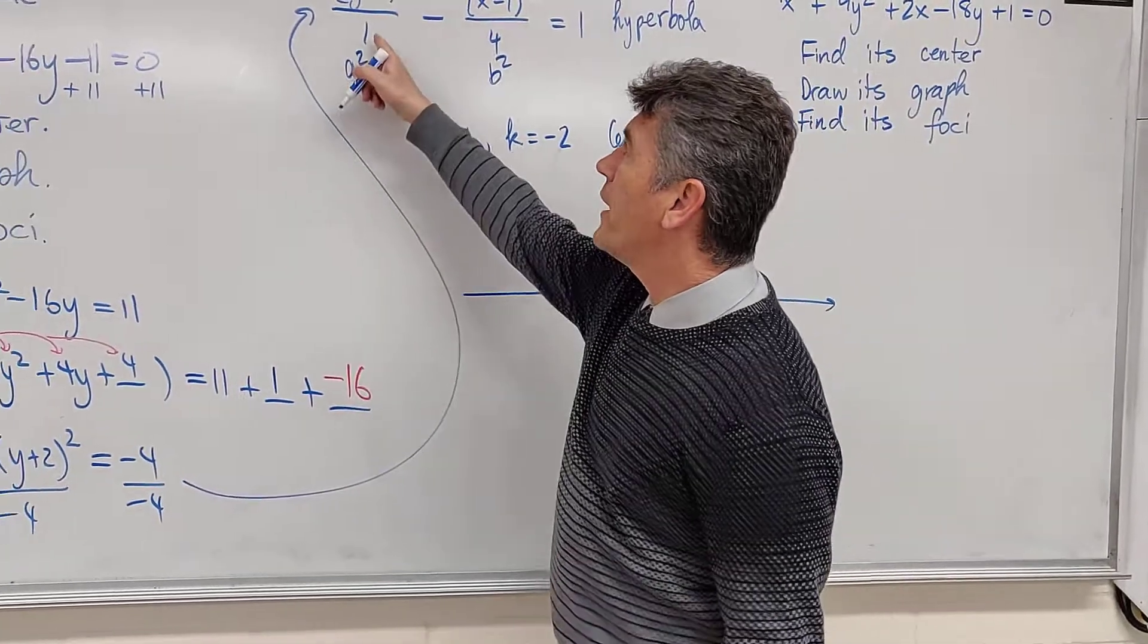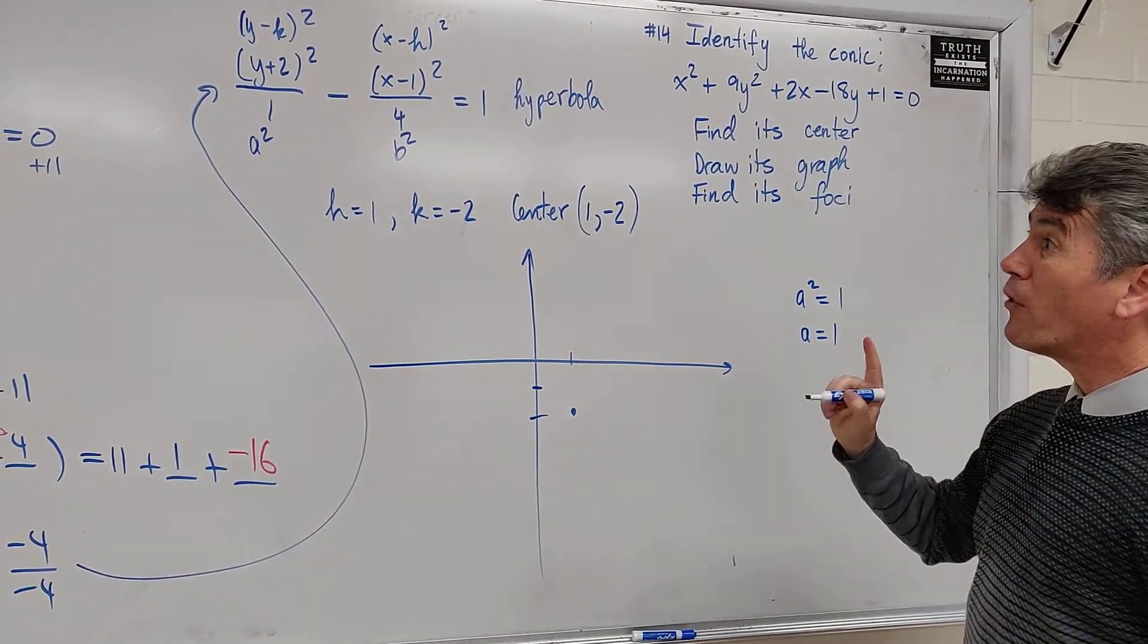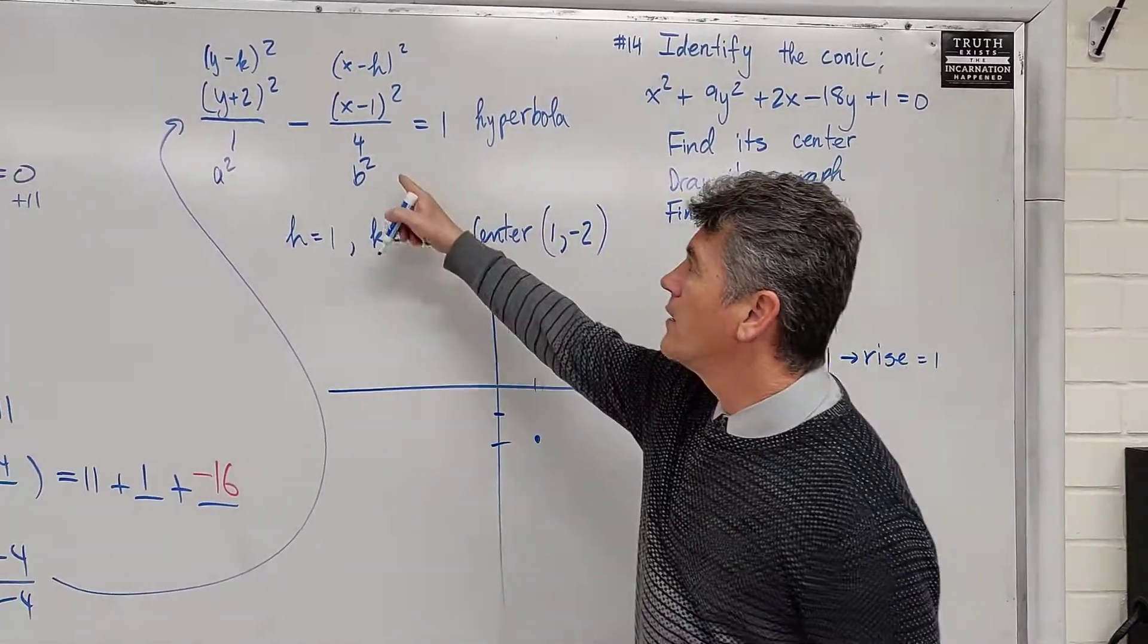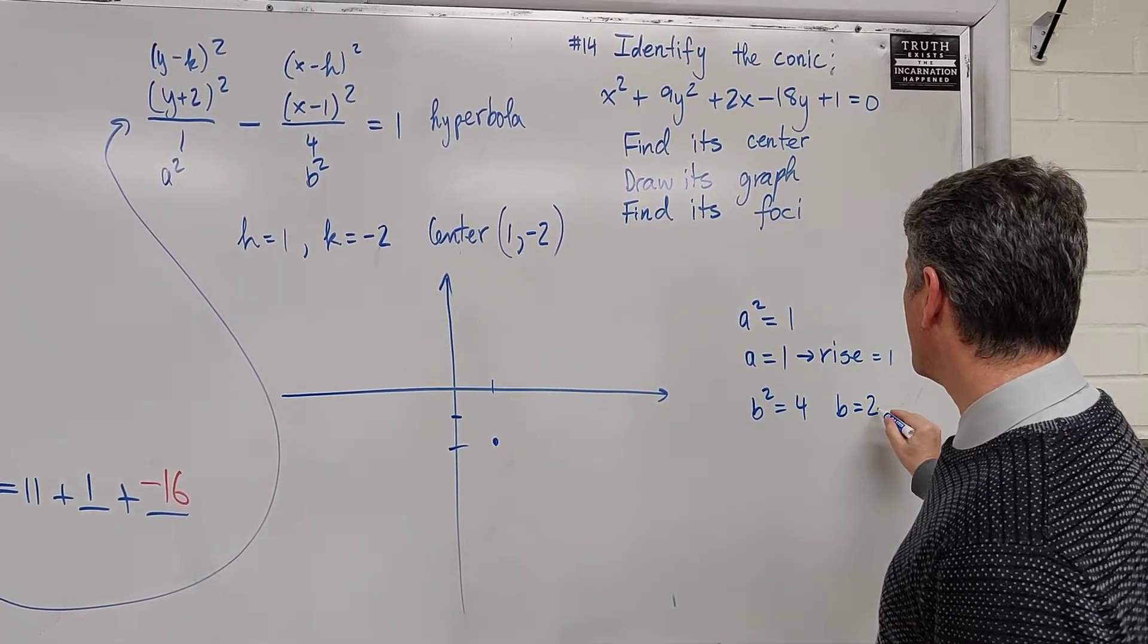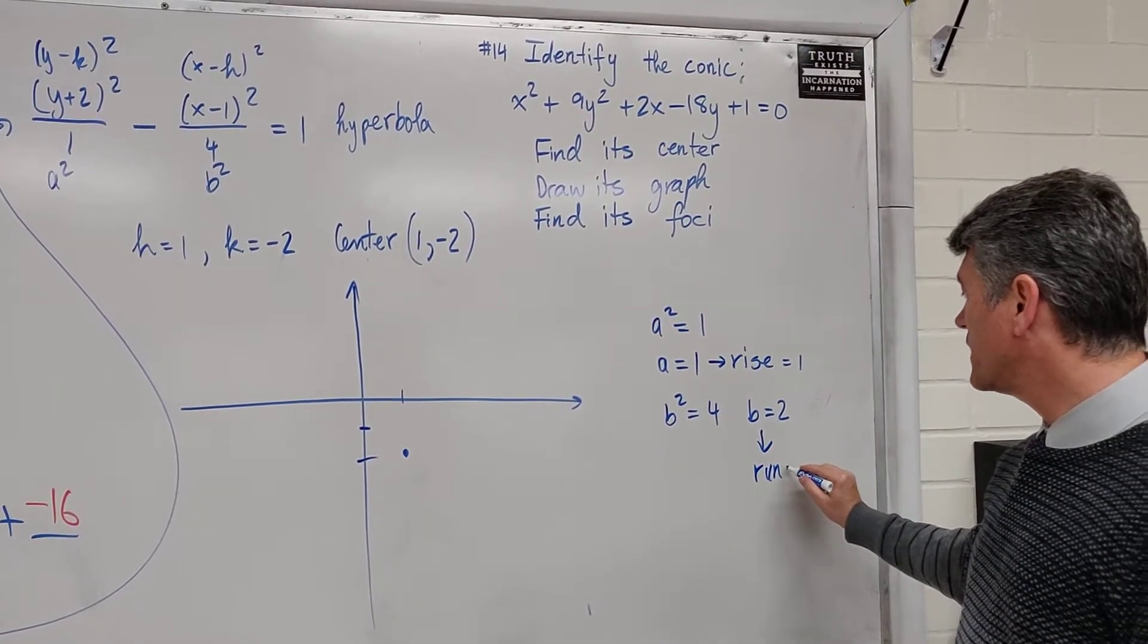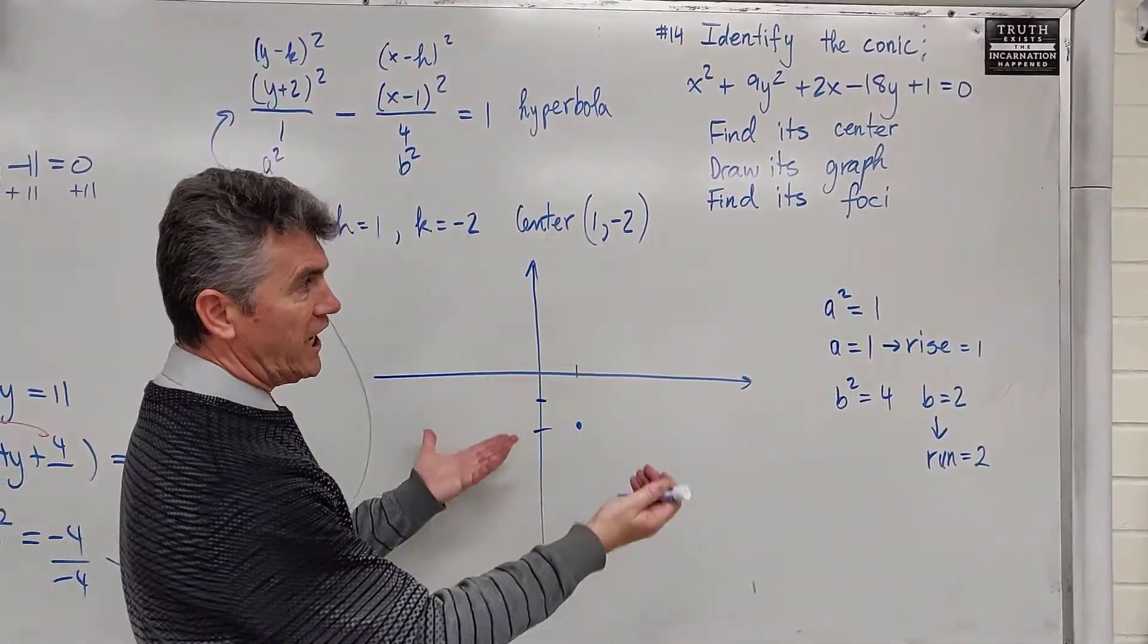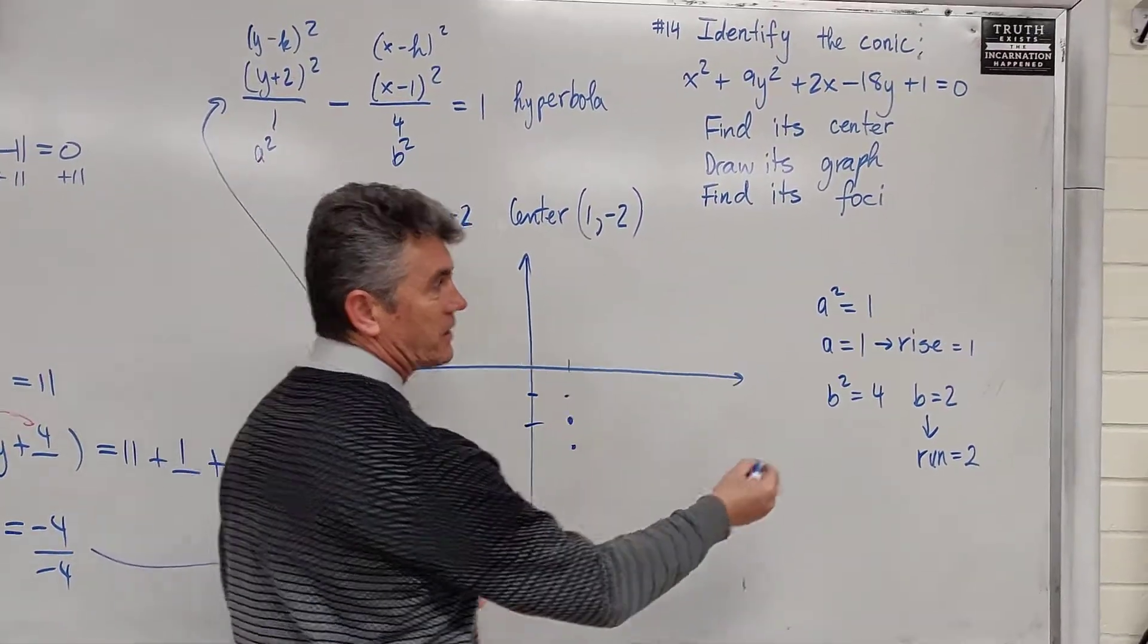Your a squared is 1, which means your a is equal to 1. And more importantly, it means that the rise of your asymptotes is 1. Find your b, b squared is equal to 4. Your b is equal to 2. And more importantly, the run of your asymptote is equal to 2. So we're going to use the same procedure as before. From the center of the hyperbola, we go one up, one down, because a would be either positive or negative 1.